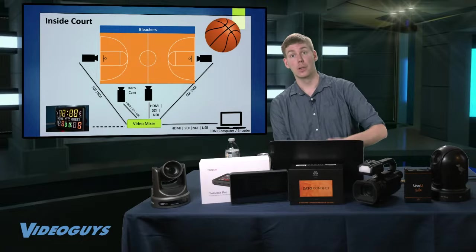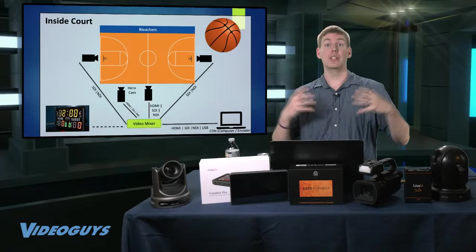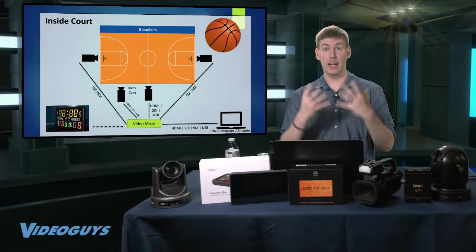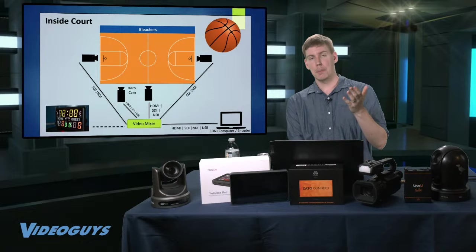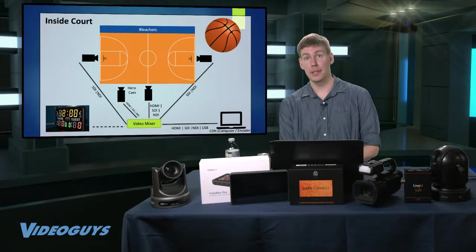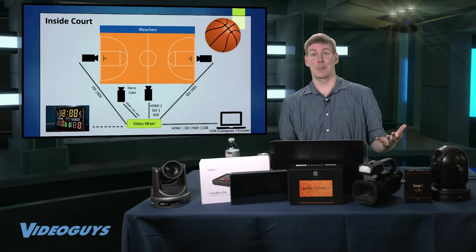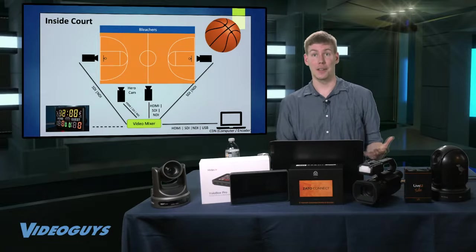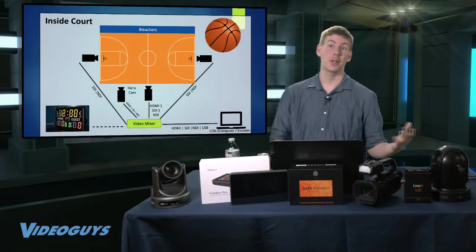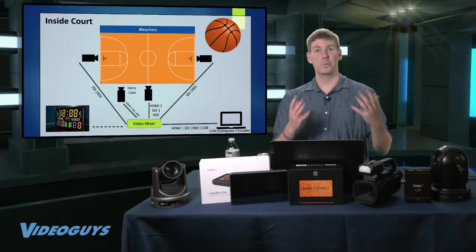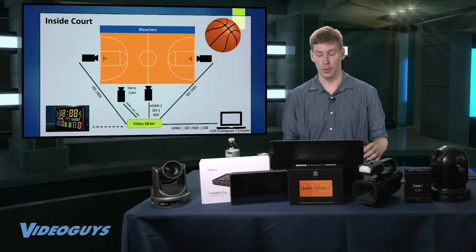That's a really cool way to get more cameras and more production value into your production. The great thing about mounting cameras on the back of the backboard is you never have to worry about the camera getting hit by the ball because it's behind the backboard. If anything, the ball is going to hit the backboard — that's what it's designed to do. So it's a really cool camera angle and you don't have to worry about damaging any equipment.